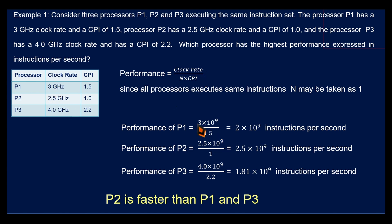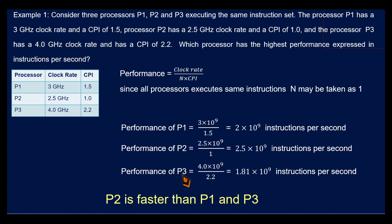For P1: clock rate is 3 × 10⁹ Hz, divided by CPI of 1.5, giving 2 × 10⁹ instructions per second. For P2: 2.5 × 10⁹ divided by CPI of 1, giving 2.5 × 10⁹ instructions per second. For P3: 4 × 10⁹ divided by CPI of 2.2, giving approximately 1.81 × 10⁹ instructions per second.